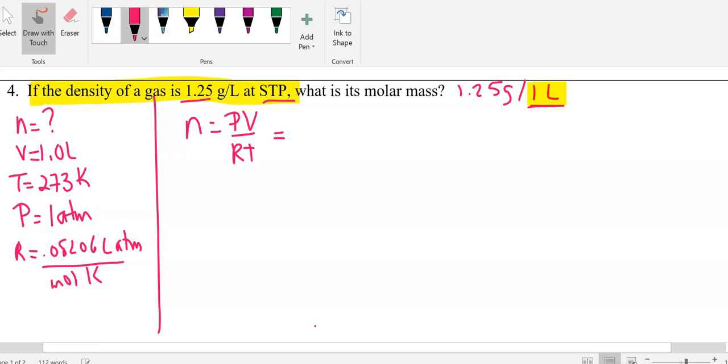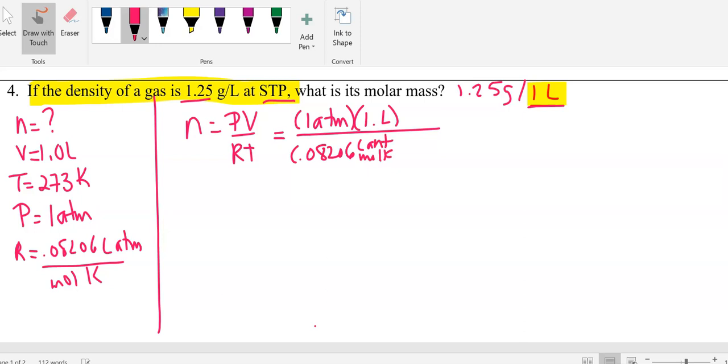Plugging in numbers. Our P is 1 atm. Our V is 1 liter. Our R is still 0.08206 liter atmospheres per mole Kelvin. And our T is standard temperature, 273 Kelvin. Now canceling atmospheres, liters, kelvins. We're left with 1 over 1 over moles, which is moles. And when we plug this in, we get N is equal to 0.0446 moles.